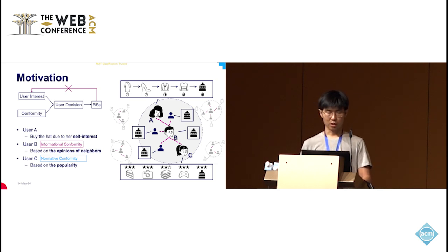So from this example, we can see three typical behaviors. The first one is self-interest. User B is showing what we call informational conformity, and user C is normative conformity. I will explain them in the following slides.